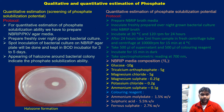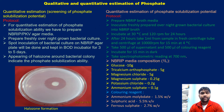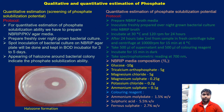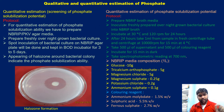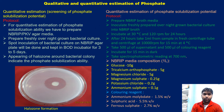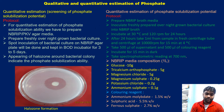Bacteria can be isolated by serial dilutions, and once you have a colony, you can screen for phosphate solubilization potential ability. There are two parts: qualitative and quantitative. Qualitative means just screening whether the bacteria is phosphate solubilizing or not. For this, we have to prepare a solid media known as NBRIP agar media or PKV agar media.